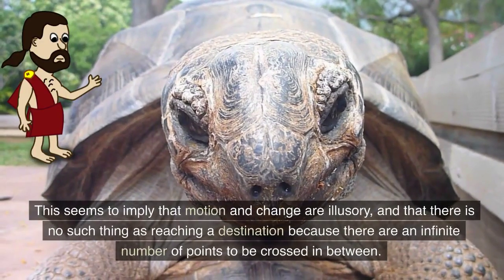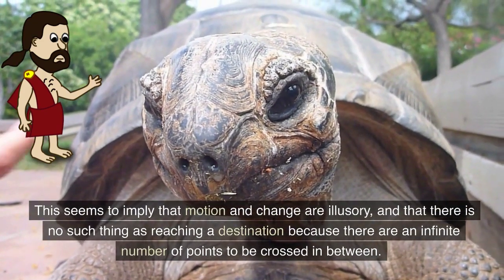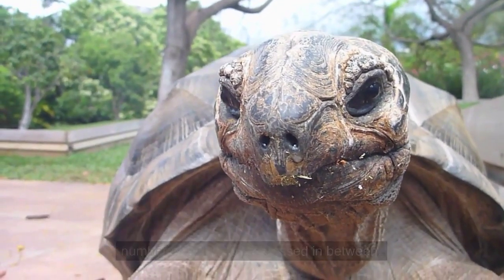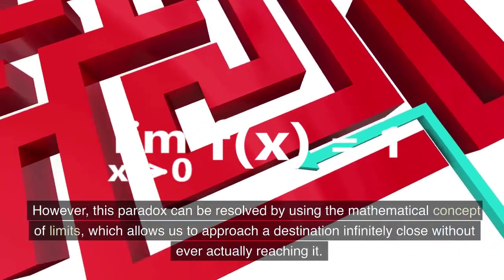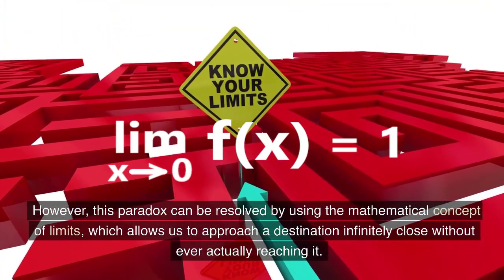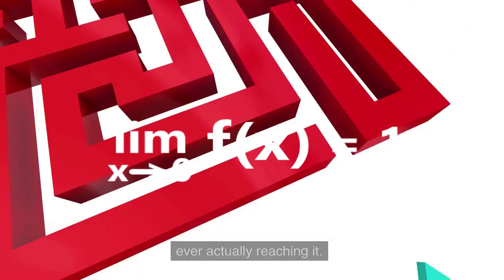This seems to imply that motion and change are illusory, and that there is no such thing as reaching a destination because there are an infinite number of points to be crossed in between. However, this paradox can be resolved by using the mathematical concept of limits, which allows us to approach a destination infinitely close without ever actually reaching it.